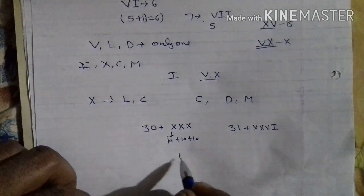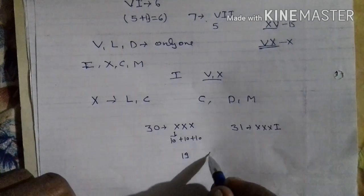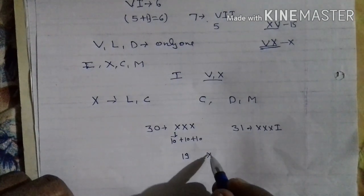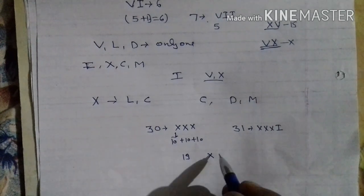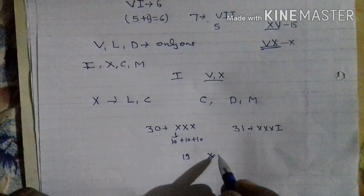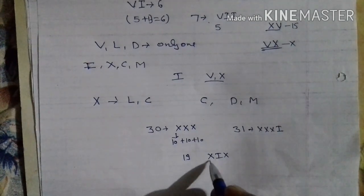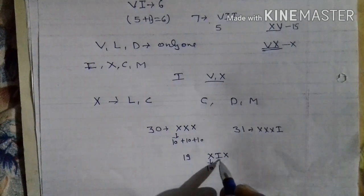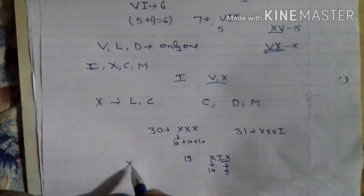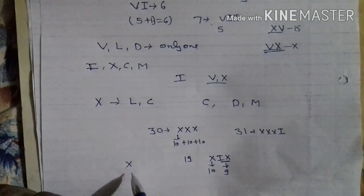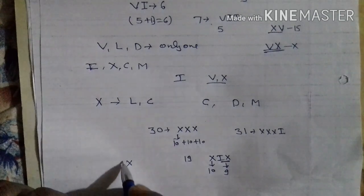If we want to write 19, this is 10. 19 means 10 plus 9. These two symbols represent 9 because this is 10, and if we want to write 9 we subtract 1 from 10. So 19 is written as X followed by the symbol for 9.